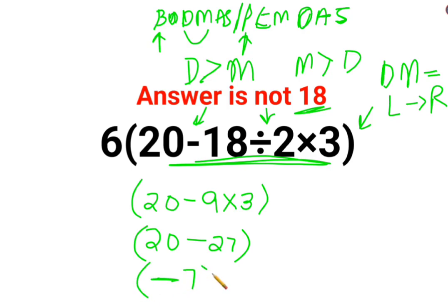So your answer is minus 7, and this will still get multiplied to 6. So the answer for this question is supposed to be minus 42.